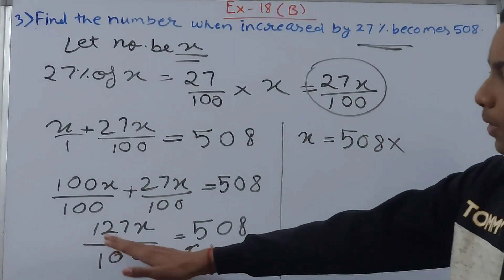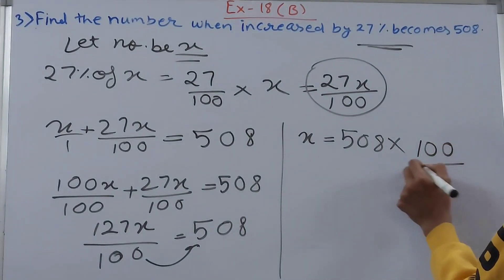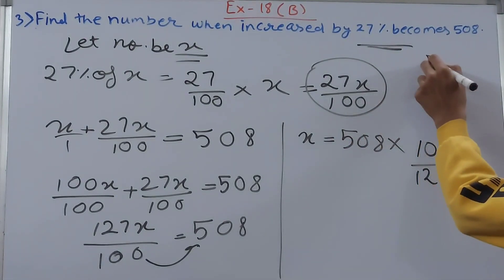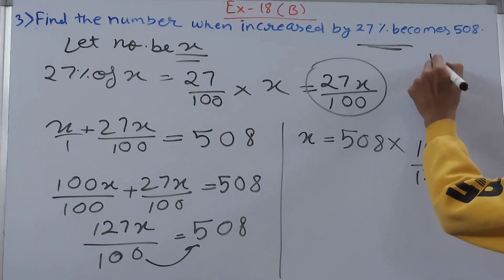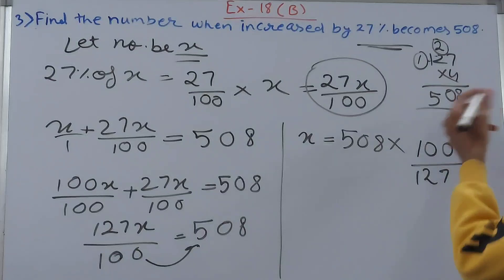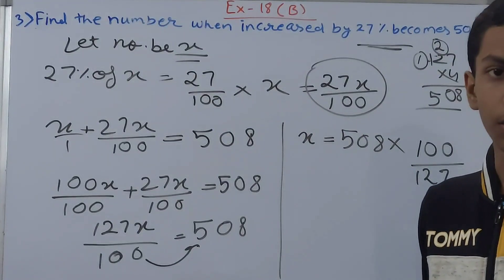Again, this will be reciprocated if this will go here, right? So this fraction will be reciprocated. So we get x equals to 508 into 100 upon 127. Now let's see how many times will this be divisible. So let's multiply by 4 and check.